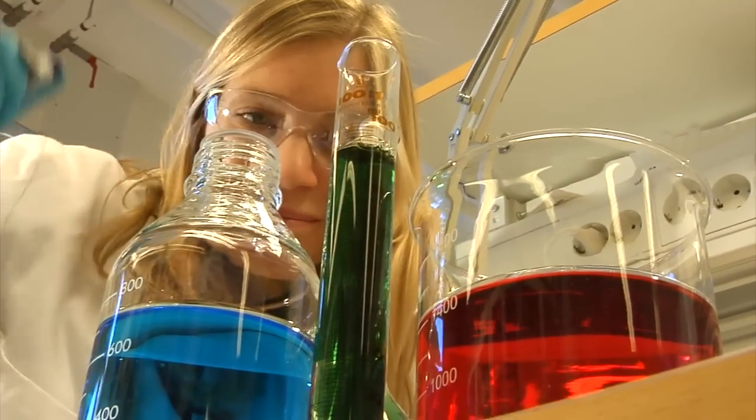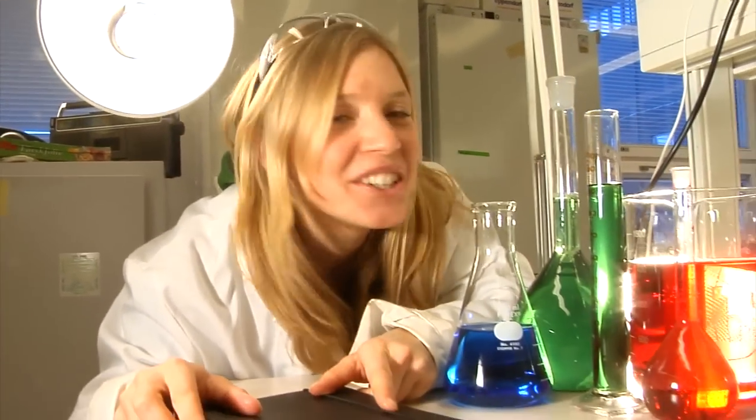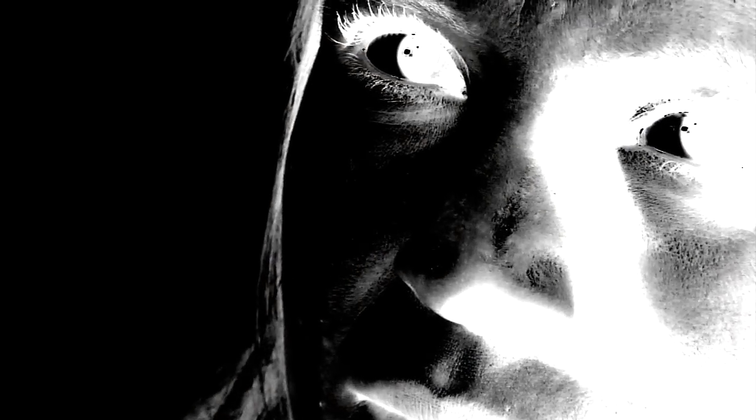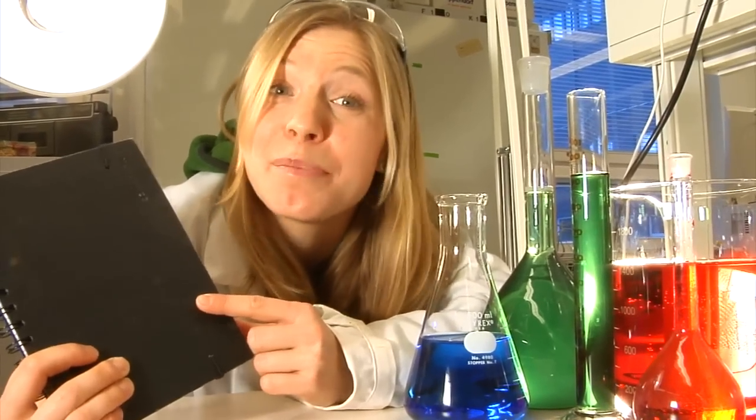But first, we need light. Light contains wavelengths of all colors. If something is black, all the colors from the light are absorbed and none is reflected back to our eyes. And we therefore see the object as black.